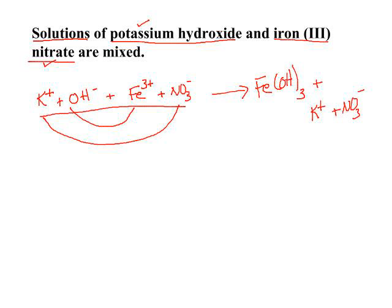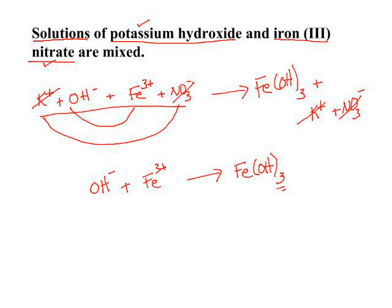Now it's just a short step to your net ionic equation. Cancel out your spectator ions, leaving you with the hydroxide ion and the iron(III) ion forming iron(III) hydroxide. As with any equation, you need to make sure you are balanced for atoms and charges. You have 3 hydroxides here, so you need to put a 3 in front of the hydroxide. And there's your balanced net ionic equation for that reaction.